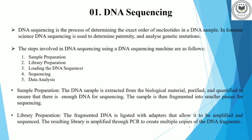Our first topic is DNA sequencing. DNA sequencing is the process of determining the exact order of nucleotides in a DNA sample. Here is a step-by-step overview of the DNA sequencing technique. Firstly, the DNA is obtained from a biological sample and is isolated and purified. The sample is then fragmented into smaller pieces for sequencing, and often amplified using PCR.